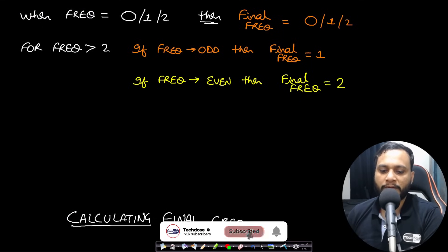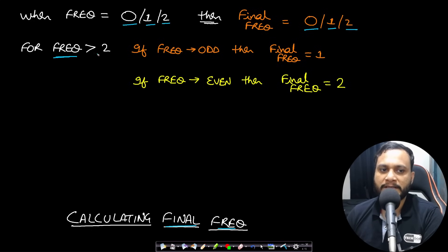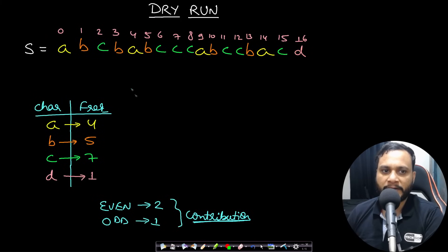To calculate the final frequency: if a character doesn't occur in the string, it won't appear in the final string. If the frequency is 1 or 2, the final frequency is also 1 or 2. If the frequency is greater than 2, it reduces to either 1 or 2 — 1 if the frequency is odd, 2 if the frequency is even.